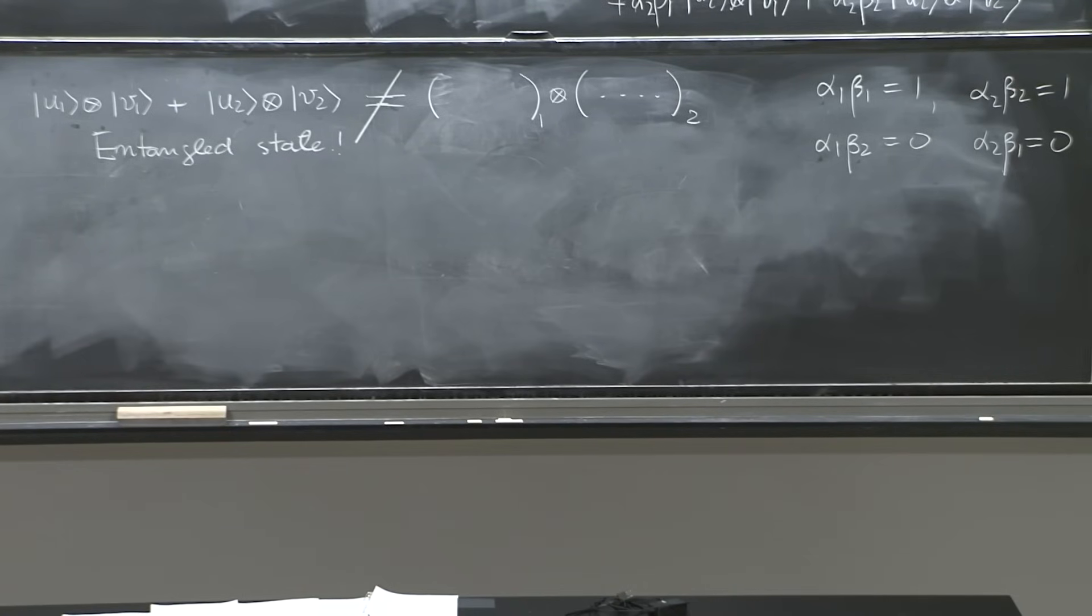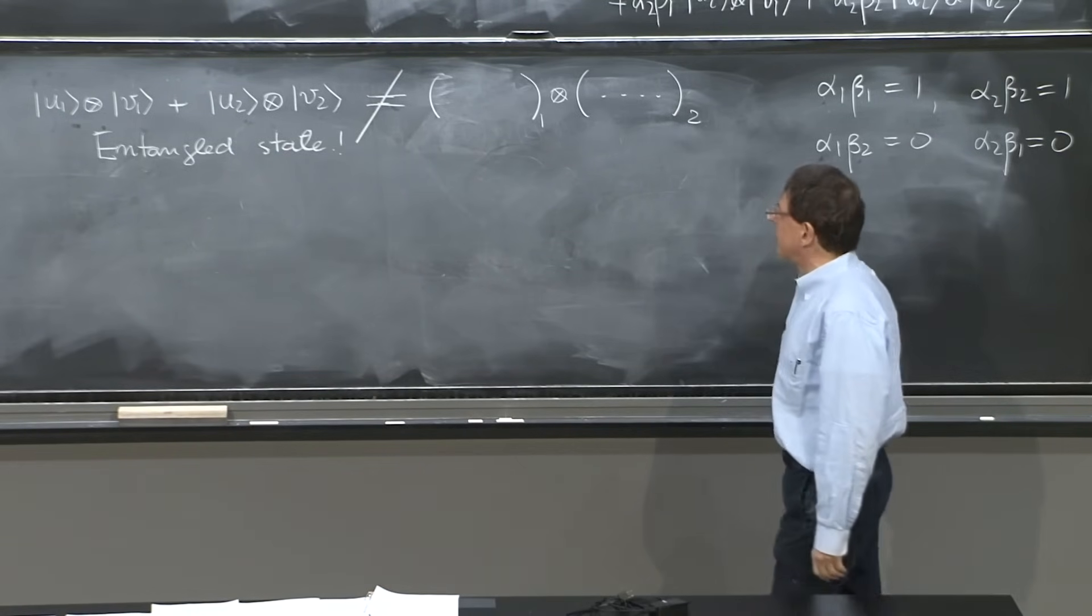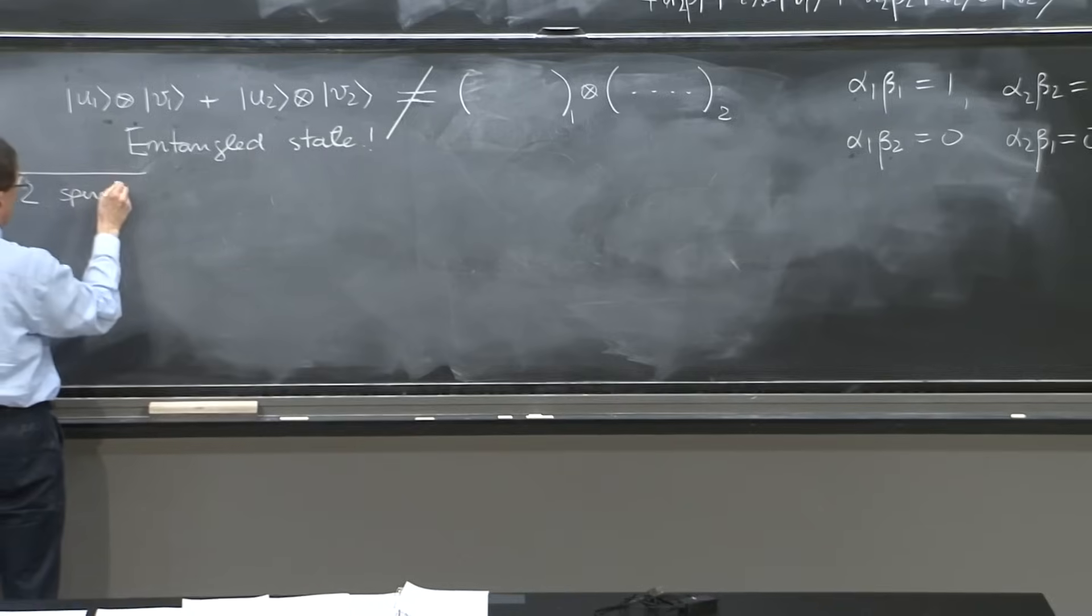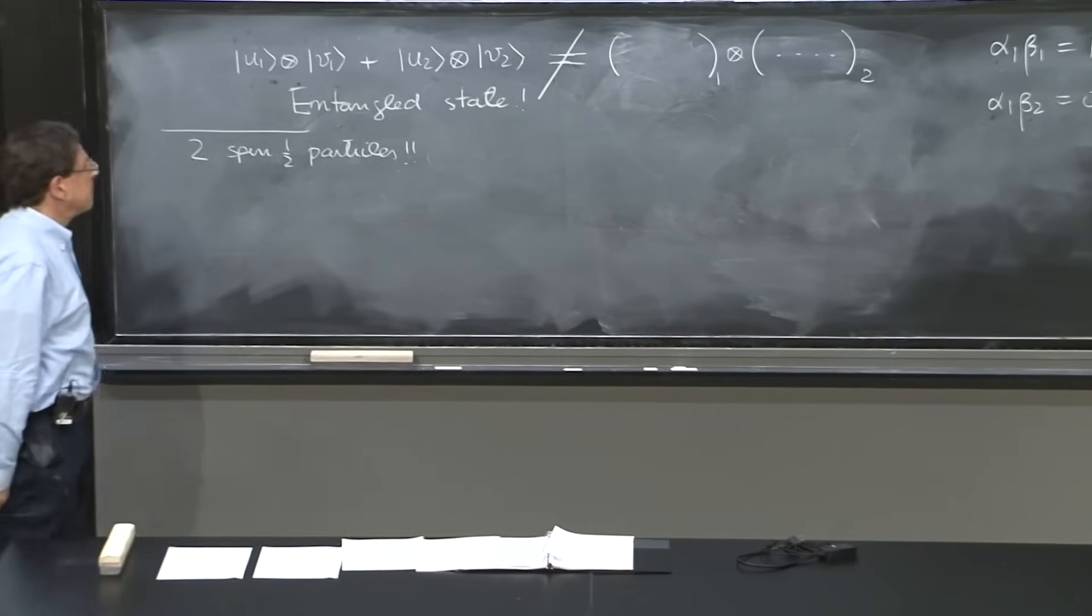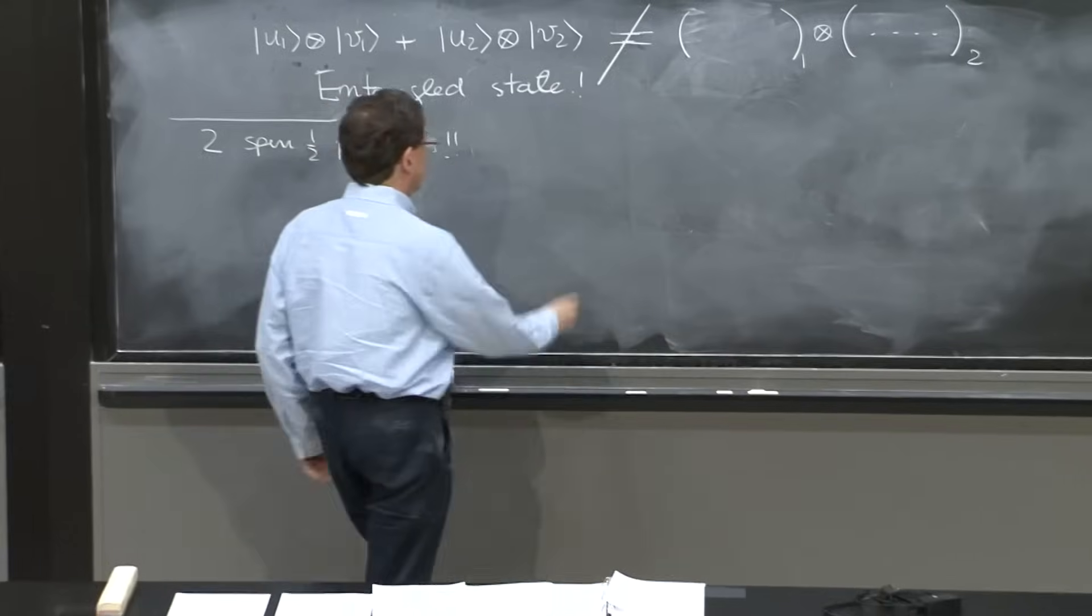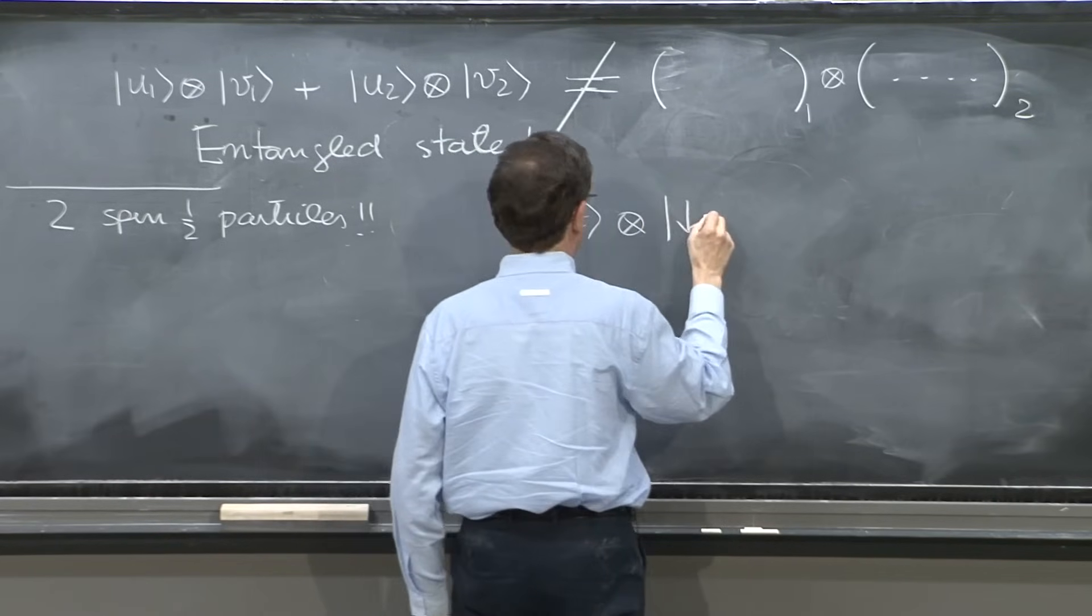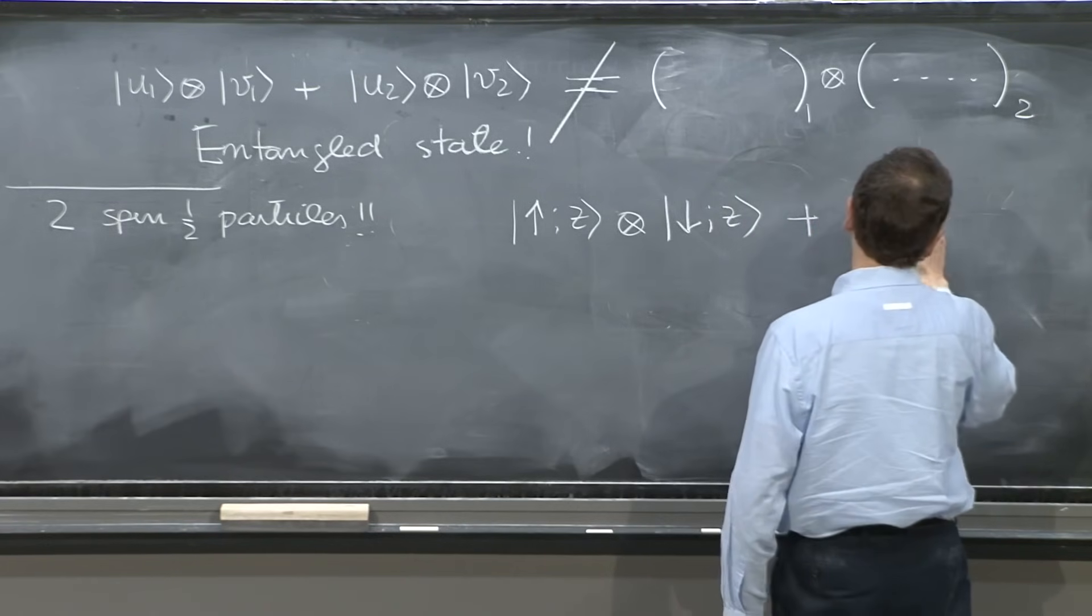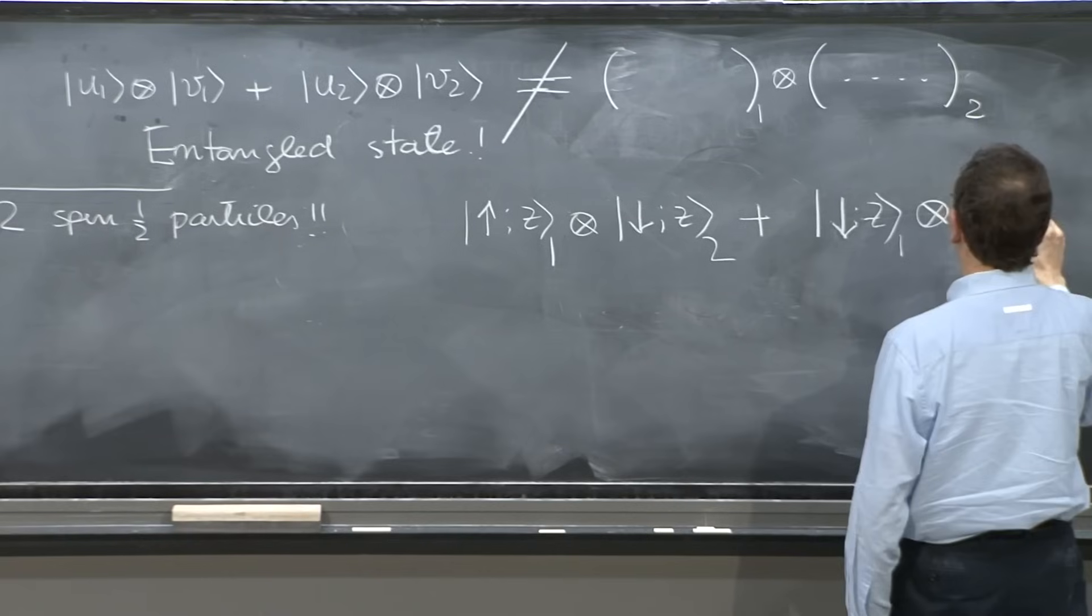And then we can build entangled states in very strange states. So with two particles with spins, for example, we can build entangled states of two spin 1/2 particles. And this state could look like this: the first particle is up along z and the second particle is down along z, plus a particle that is down along z for the first particle but the second is up along z.